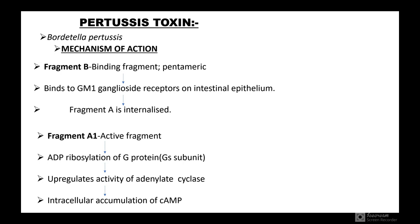Pertussis toxin is secreted by Bordetella pertussis. The mechanism of action similarly involves two fragments, Fragment B and Fragment A. Fragment B is the binding fragment, pentameric with 5 subunits, binding to the GM1 ganglioside receptor on intestinal epithelium. Fragment A gets internalized, and Fragment A1 is the active fragment, which causes ADP-ribosylation of the G stimulatory protein subunit, upregulating adenylate cyclase and causing intracellular accumulation of cyclic AMP.